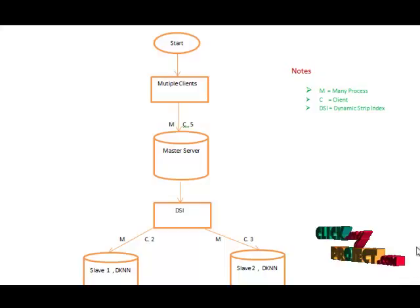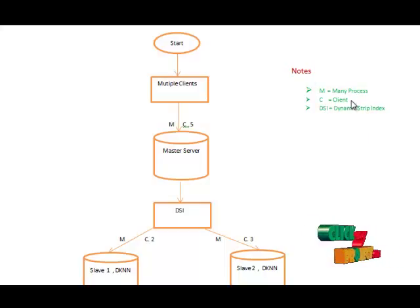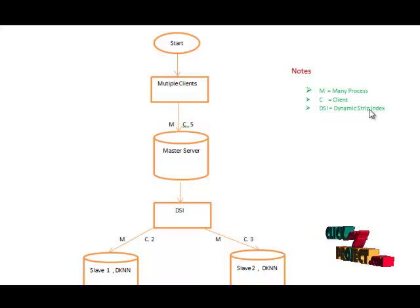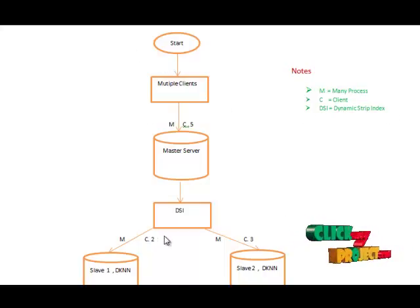This is a flow diagram for this project. The nodes represent: M means many processes, C means client, and DSI means Dynamic Strip Indexes. These nodes are used in this flow diagram.